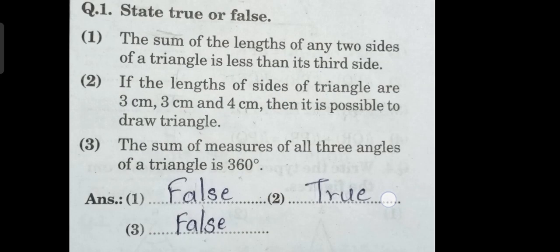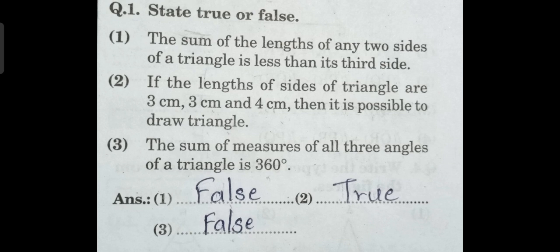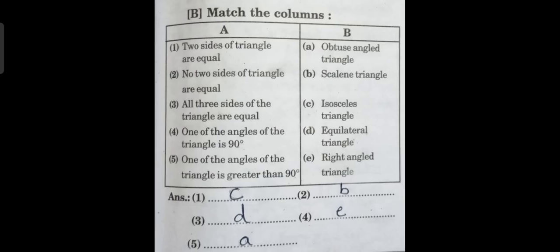We have now completed true or false. After fill in the blanks, write true or false and copy all the ones explained. Next question is match the following: two sides of a triangle are equal — isosceles triangle. No two sides of a triangle are equal — scalene triangle. All three sides of a triangle are equal — equilateral triangle. One of the angles of the triangle is 90 degrees — right angle triangle. One of the angles of the triangle is greater than 90 degrees — obtuse angled triangle.